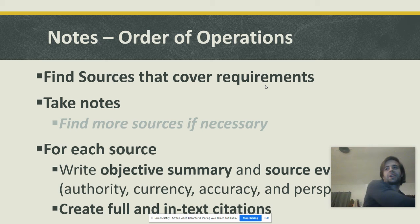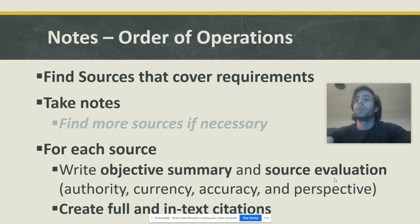Remember, for each source we're gonna have to write an objective summary, do a source evaluation using those criteria that we looked at: authority, currency, accuracy, and perspective. Then we're gonna create some full and in-text citations. I will be making videos about those other three, the summaries, evaluations, and citations.